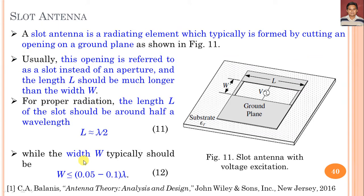First, we are going to discuss about slot antenna, and we need to understand what a slot antenna is. We can say that a slot antenna is a radiating element which is typically formed by cutting an opening on a ground plane.